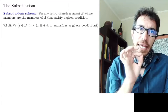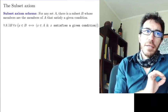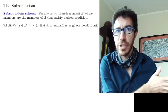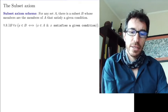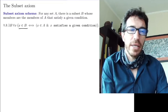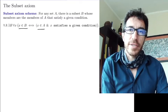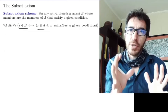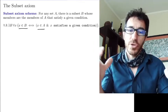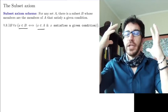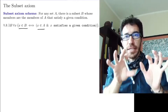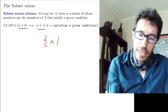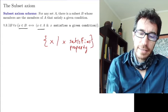The axiom says: for any set A, there is a subset B of A whose members are the members of A that satisfy a certain given condition, like being prime in the previous example. It's very important that this is only to define subsets of something we have already. The set A has to be built — we have to know it exists already — and then from it we take a subset of all things that satisfy a certain property. We cannot take a set of all x's such that x satisfies a property without that restriction.